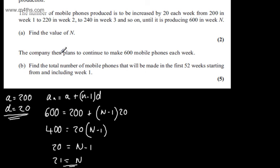The company then plans to continue to make 600 mobile phones each week. We're asked in part B to find the total number of mobile phones that will be made in the first 52 weeks starting from and including week 1. The question carries five marks.